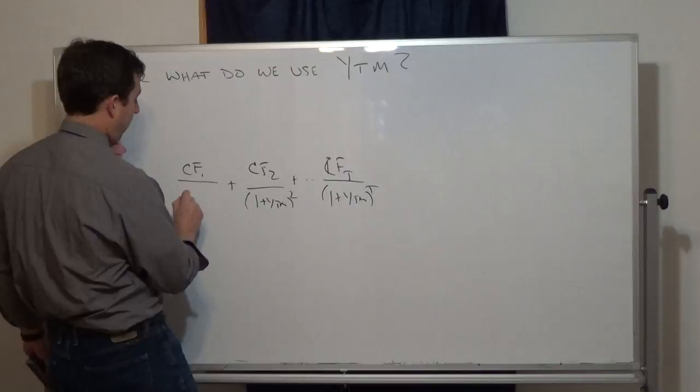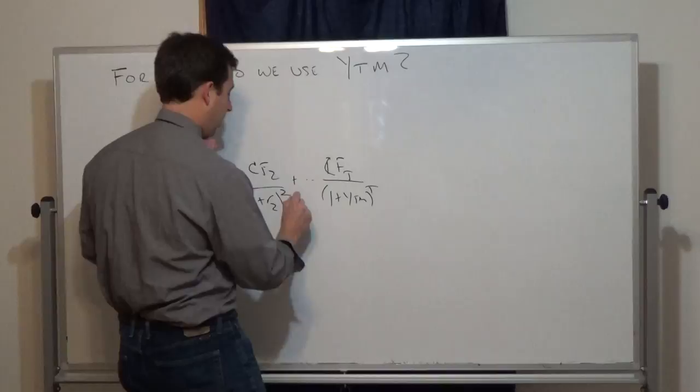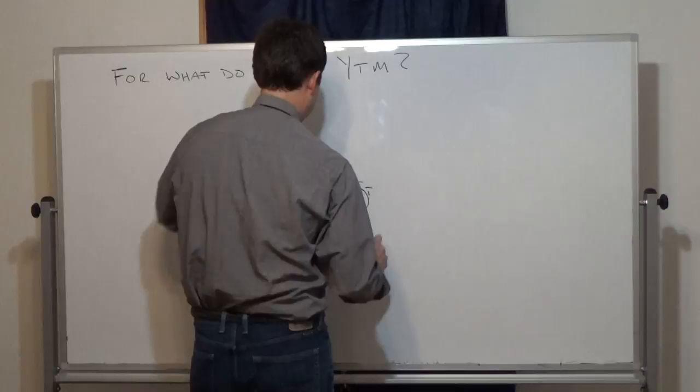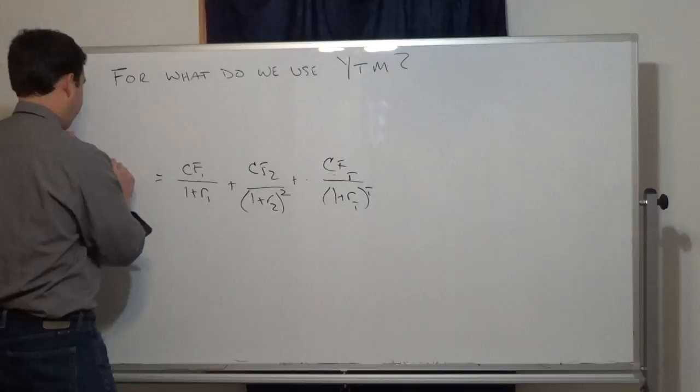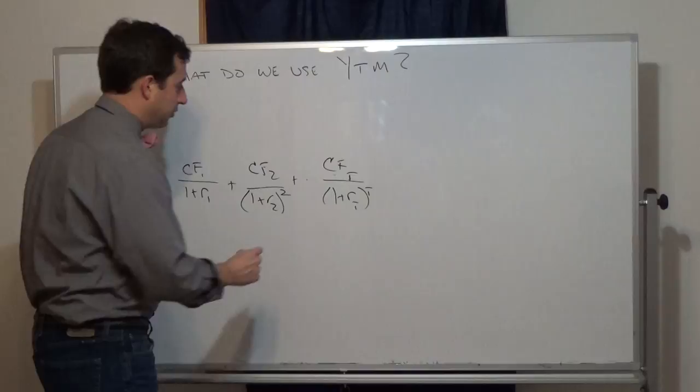You apply one plus the rate on a one-year zero, one plus the rate on a two-year zero squared, and so on up to one plus the rate on a T-year zero to the power T, applied to the cash flows at each time T. This gives you the bond's price or bond value.